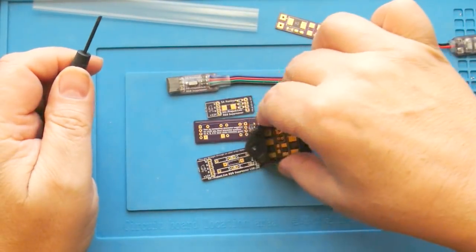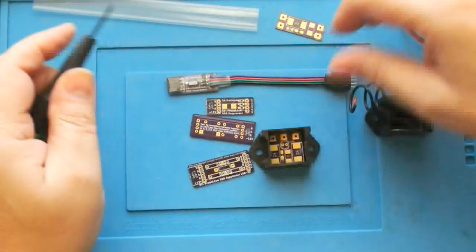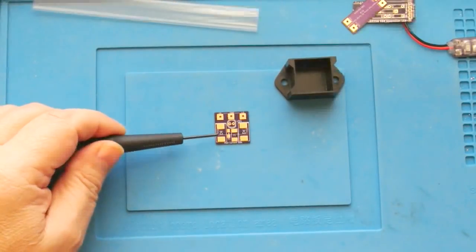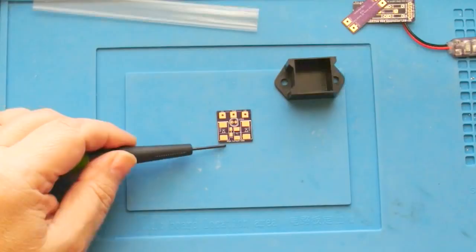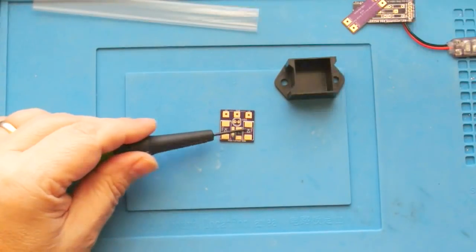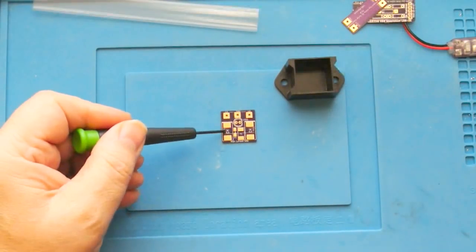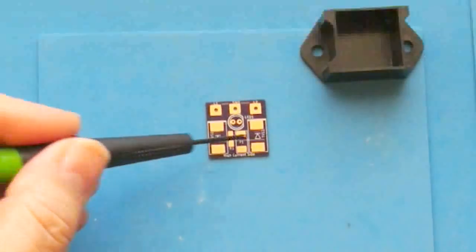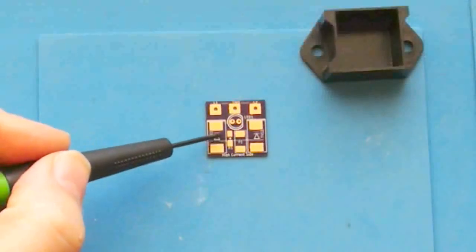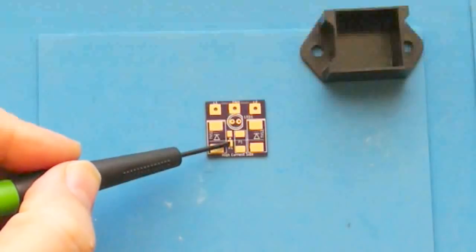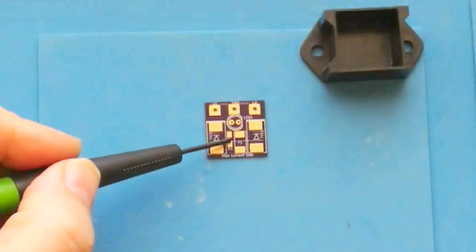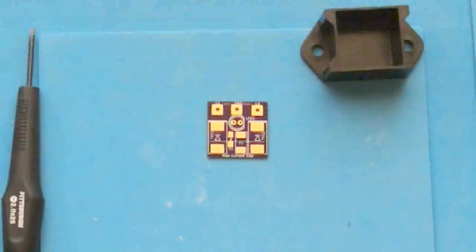Alright, so we're going to build as a demonstration one of these. Again, go to my website because I show you the part sources and what values I recommend. Now you have to pay attention to the polarity of this, but these are the two TVS, this is a fuse, this is a current limiting resistor for the LED, and that's the LED itself.